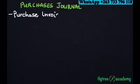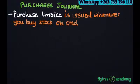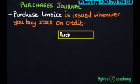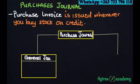It is important to note that purchase invoices are the source documents we use for the Purchases Journal. It is issued whenever you buy stock on credit, so the Purchases Journal records only credit purchases.